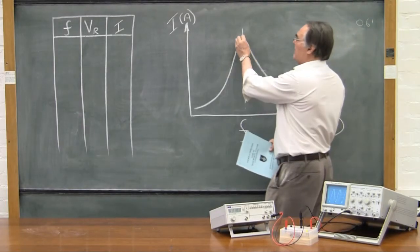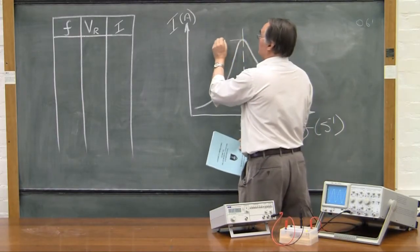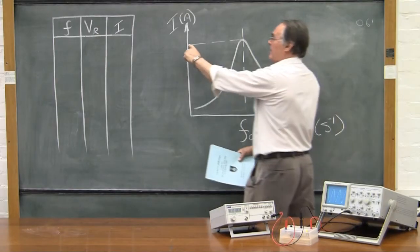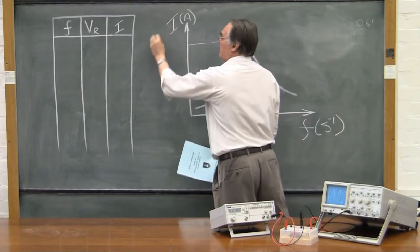You draw a line from the peak back across to this I axis and that point over there is the maximum current.